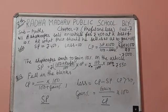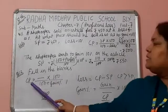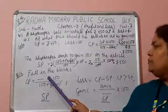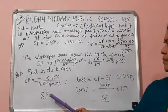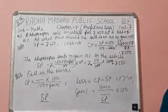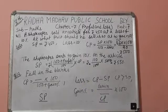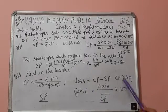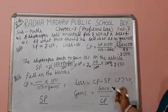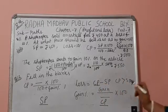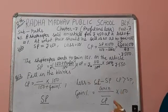At the end of this chapter, I am recalling the formulas once again. CP multiplied by (100 divided by 100 plus gain percent) fills the vacant place for SP. Loss is CP minus SP — that means when CP is greater than SP, we write CP minus SP. Gain percent equals gain divided by CP, multiplied by 100.